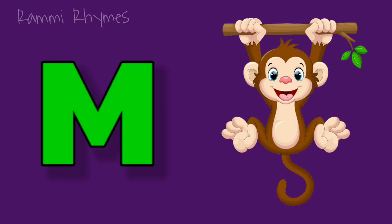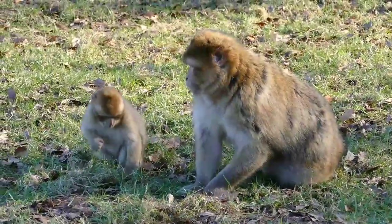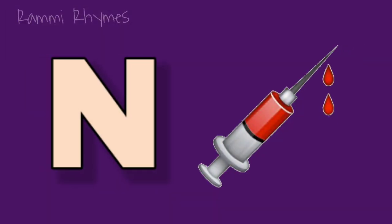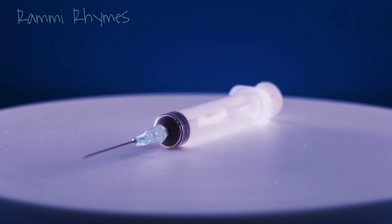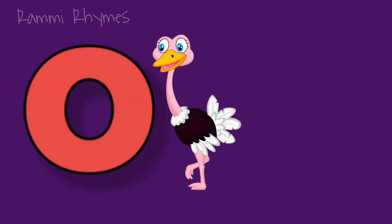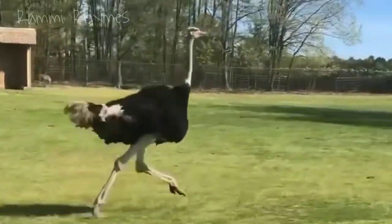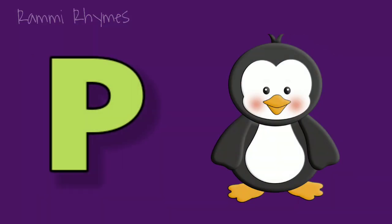M is for monkey. N is for needle. O is for ostrich. P is for penguin.